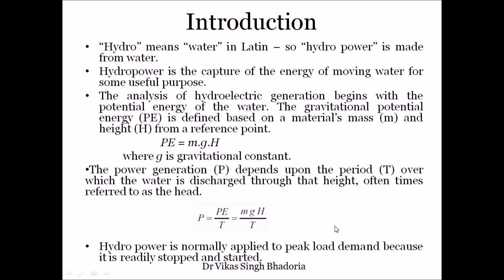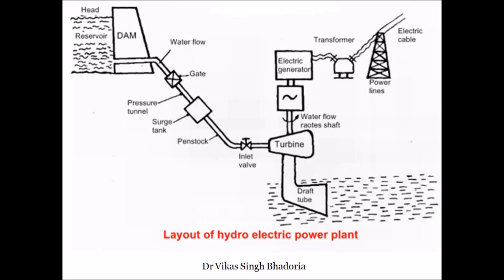In general, a hydropower plant is used as a peak load power plant because it can be easily stopped and started.